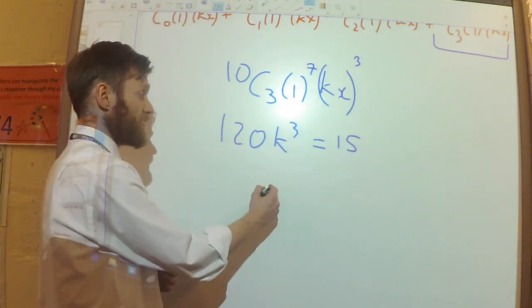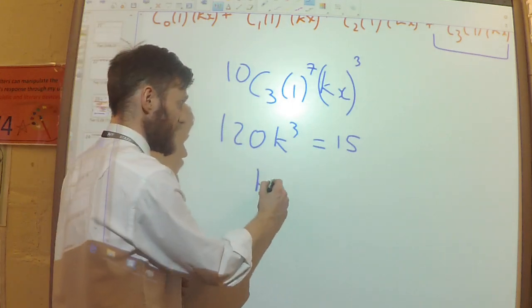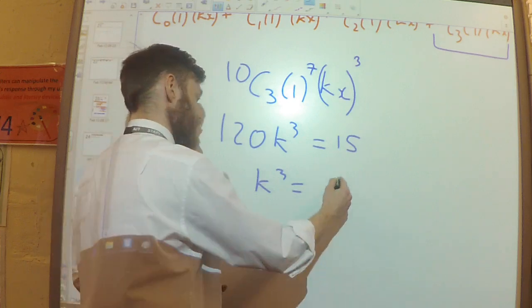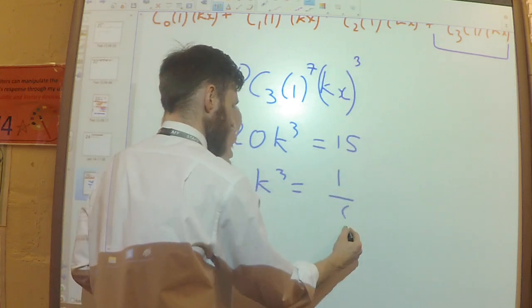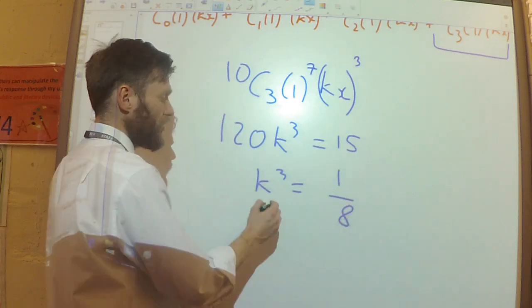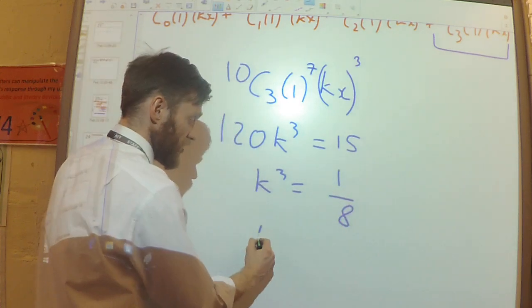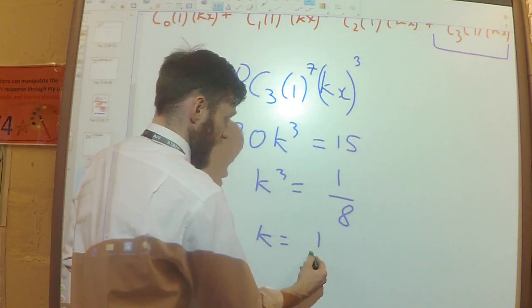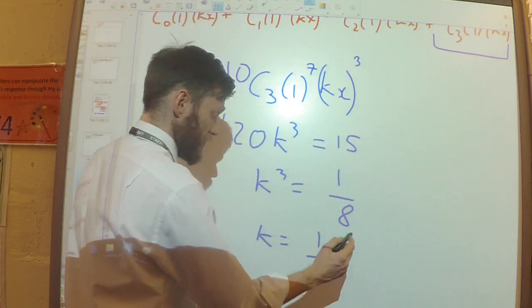I can divide both sides by 120: 15 divided by 120 is 1/8. Then taking cube roots of both sides, k equals one half.